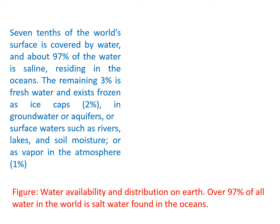As we know, 70% of the world's surface is covered by water, and about 97% of that water is saline in nature. Only 3% is in the form of fresh water, and within that, 2% is in frozen form — as ice caps. So available surface water is less than 1% for us.